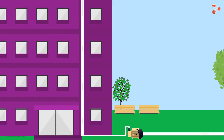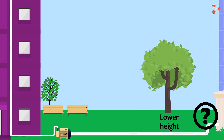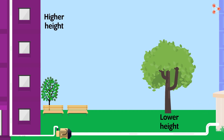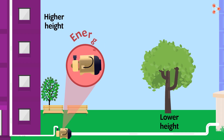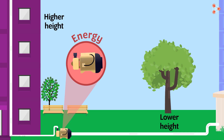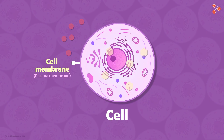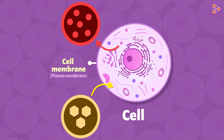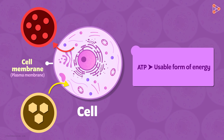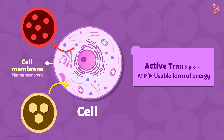How do we transport water from a lower height to a higher height? We need a pump, because this does not happen on its own. A force or some energy is required to pull the water upwards. Similarly, in a cell, some molecules have to be carried inside or moved outside the cell. This requires energy to be spent. The energy used is in the form of ATP molecules. This is called active transport.